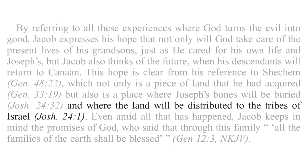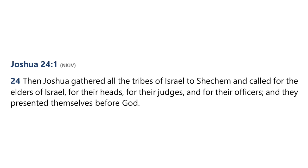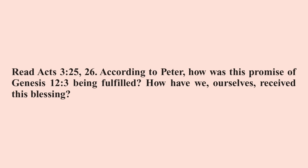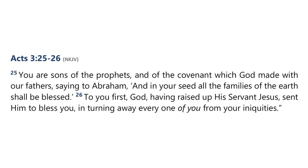Even amid all that has happened, Jacob keeps in mind the promises of God, who said that through this family all the families of the earth shall be blessed, in Genesis 12:3. And so, to finish the day, read Acts chapter 3, verses 25 and 26. According to Peter, how was this promise of Genesis 12:3 being fulfilled? How have we ourselves received this blessing? Acts 3:25: 'You are sons of the prophets, and of the covenant which God made with our fathers, saying to Abraham, And in your seed all the families of the earth shall be blessed. To you first, God, having raised up his servant Jesus, sent him to bless us, in turning away every one of you from your iniquities.'